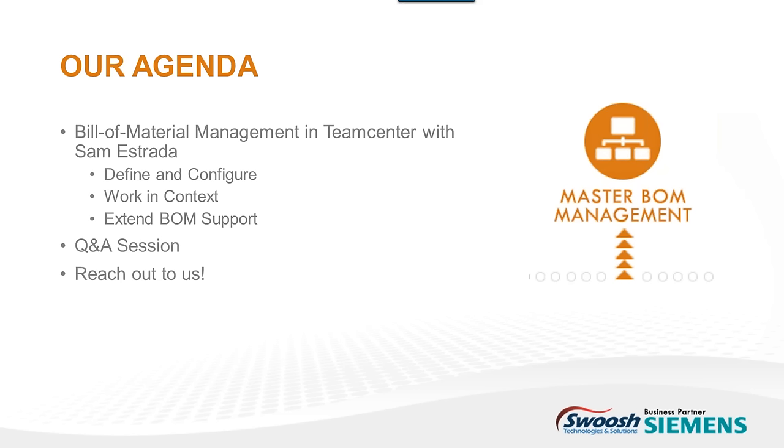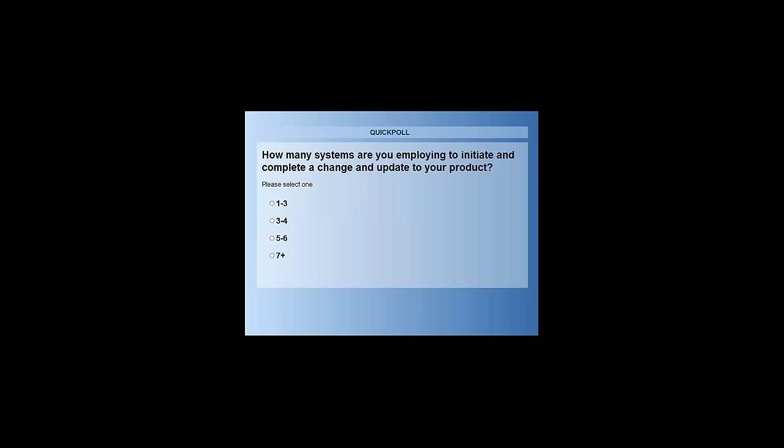I have one final poll question: how many systems are you employing to initiate and complete a change and update to your product? So if you wanted to make a change to a system or to a part, how many different programs are you jumping through in order to get through that? I'll leave it up for about 20 seconds.